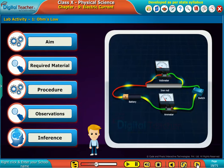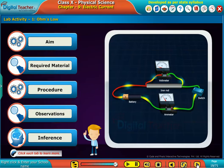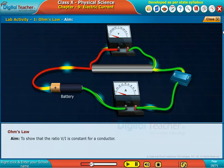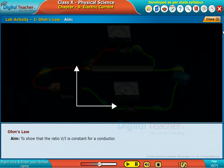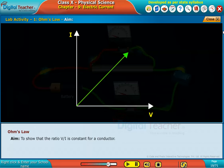Let us now do a lab activity to learn about Ohm's law. Click each step to learn more. The aim of this lab activity is to show that the ratio V by I is constant for a conductor.